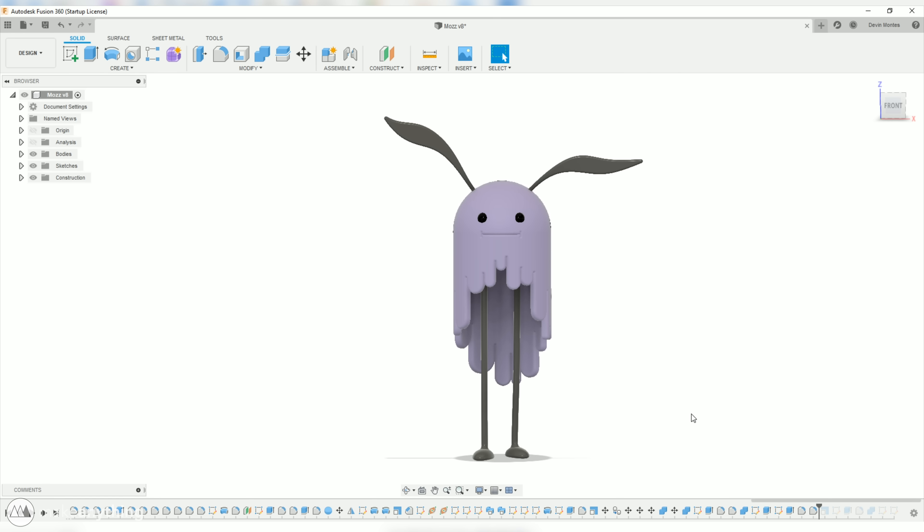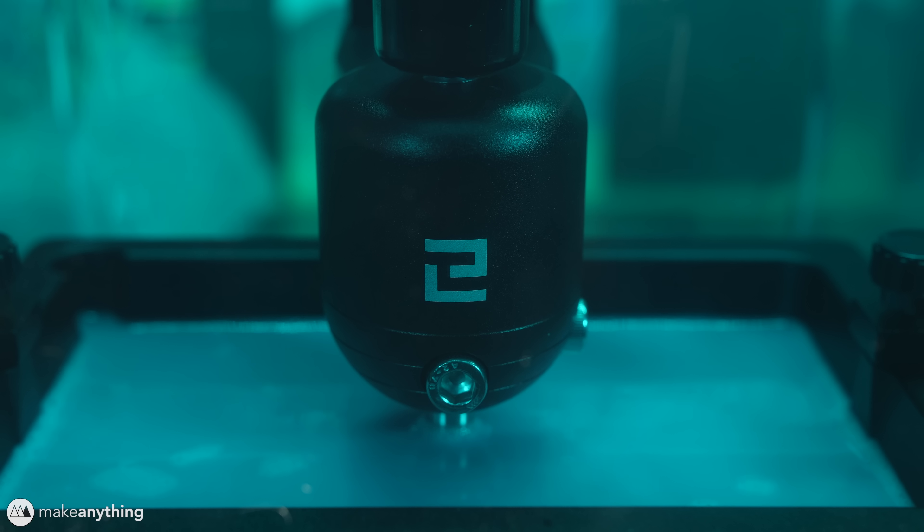So that's the model we're printing today on our Elegoo Mars and like I said I did split it up into a few parts. For this first file I'm just printing the ears since it's the smallest part and well I gotta make sure this printer works first.